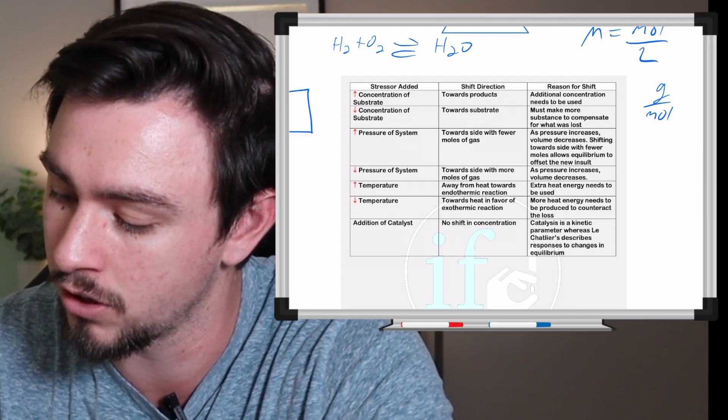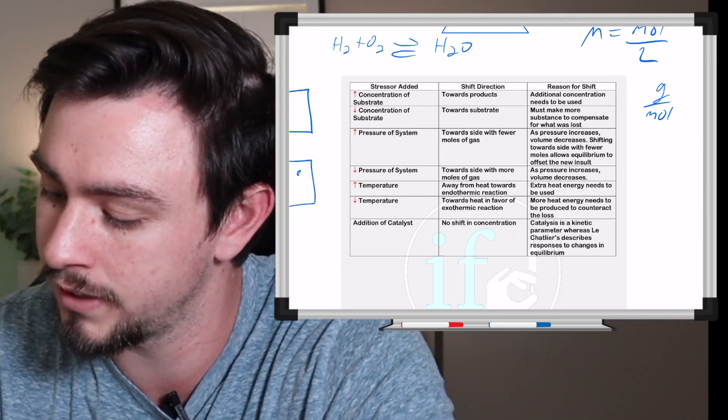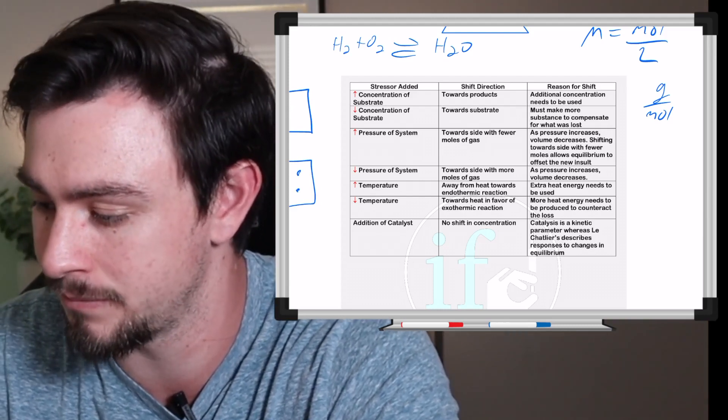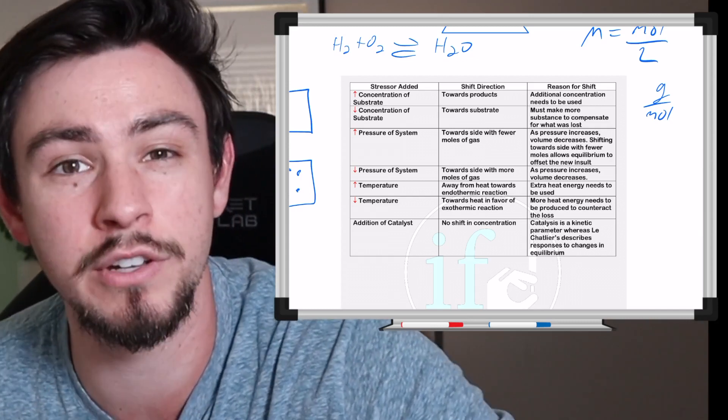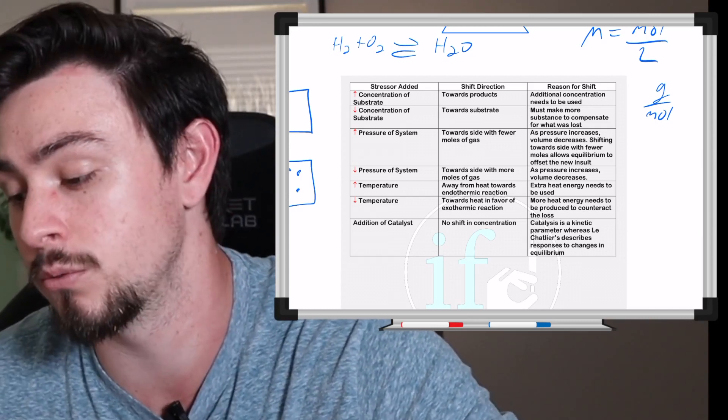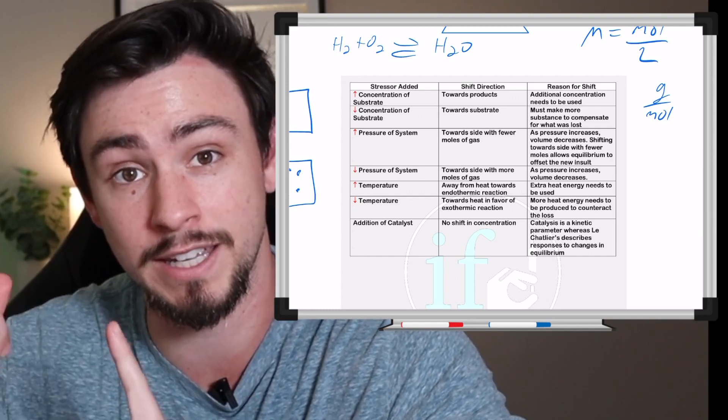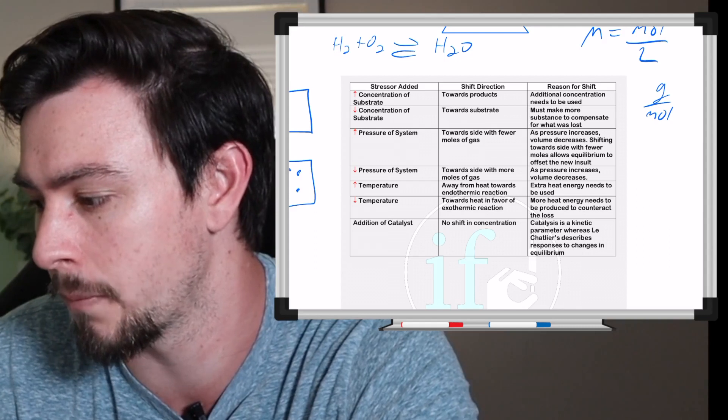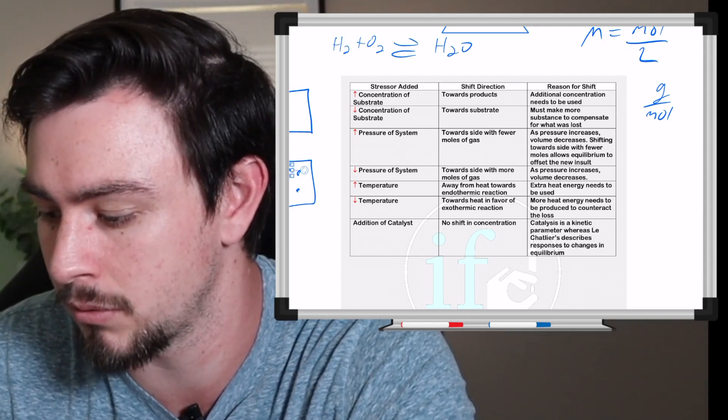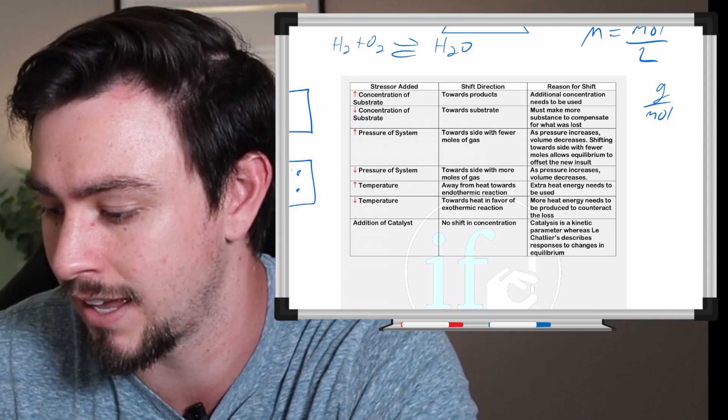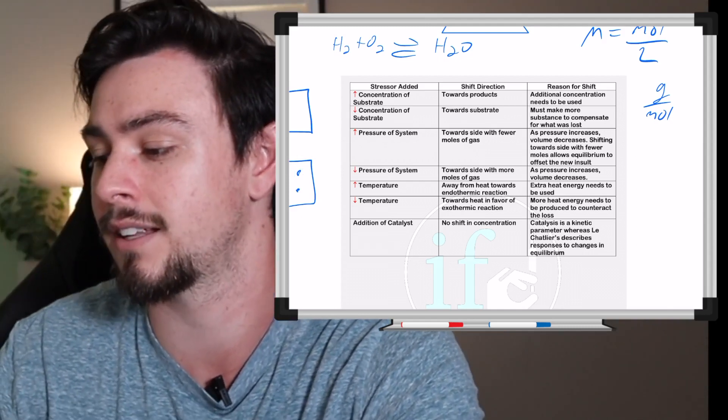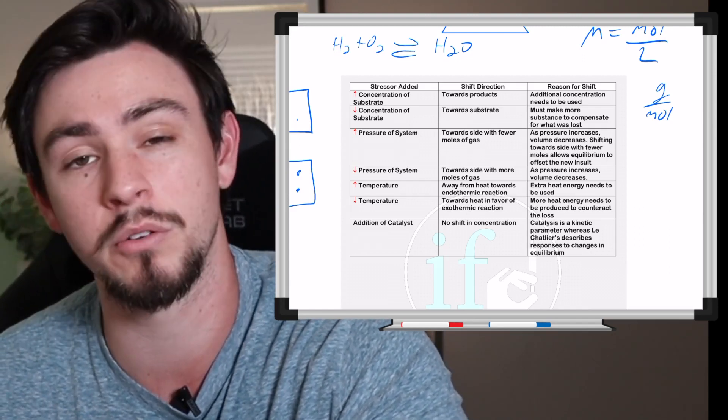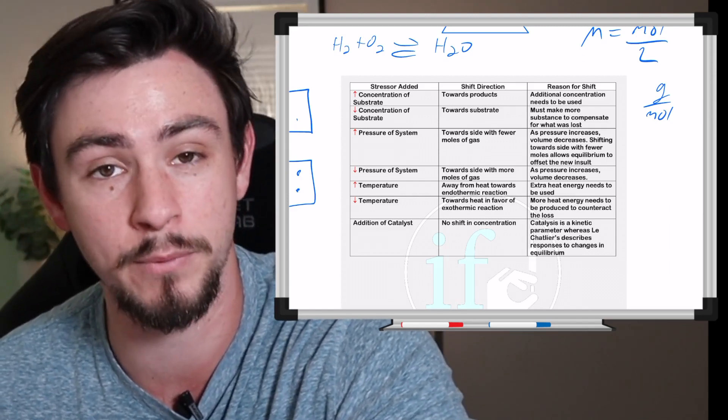So imagine that there are two rooms and one is very crowded and one is not that crowded. Well, imagine if you increase the pressure in there—maybe you shrunk the volume because remember pressure and volume have an inverse relationship—so imagine if you increase the pressure in there, it's not as comfortable anymore. Well, you would probably want to leave, you probably want to go to the room that had fewer moles. And so that's exactly how the reaction wants to carry out—it wants to shift, if you increase the pressure, it wants to shift towards the side with fewer moles of gas.